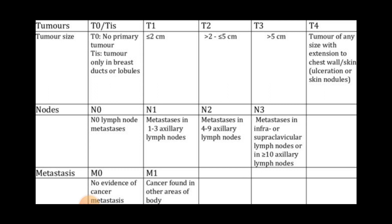T0 is when no primary tumor is detected — the patient may have distant metastasis suggestive of origin from breast carcinoma but no primary tumor. Tis means tumor only in breast ducts or lobules, that is carcinoma in situ. T1 is when the primary tumor size is less than 2 centimeters. T2 is from 2 to 5 centimeters. T3 is more than 5 centimeters. T4 is when, regardless of size, the tumor invades the chest wall or the skin, with possible ulceration or skin nodules.